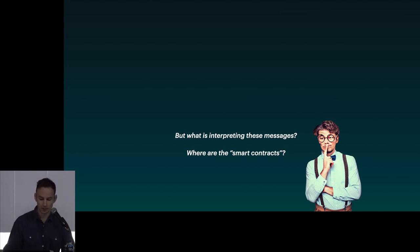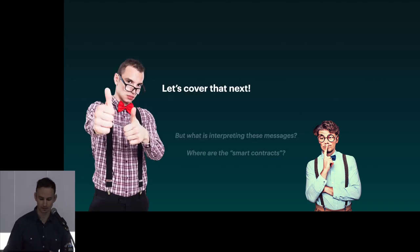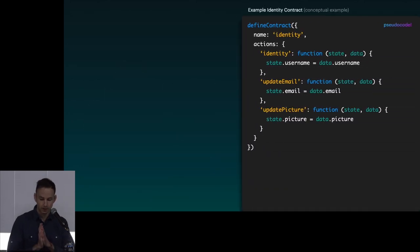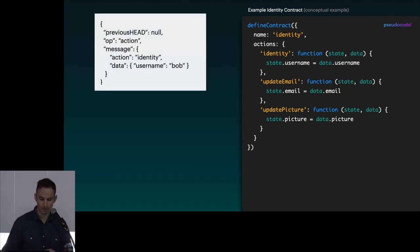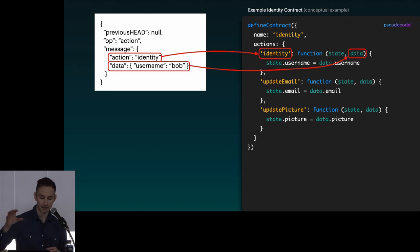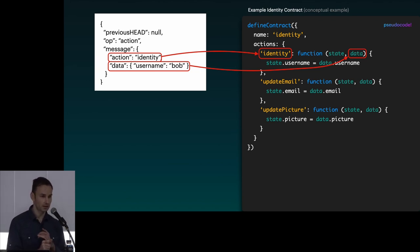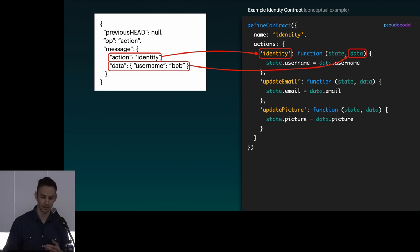So what's interpreting these messages? This is where we get to the smart contract stuff. Here is some pseudocode of what a contract might look like for a user — we call this an identity contract. This is an identity contract with three actions on it: identity, update email, and update picture. The action maps onto one of these functions. Each function takes two variables: the current state of the contract and the message data being passed in. Very simple — one line to update the email, or the picture, or in this case we're setting the username.